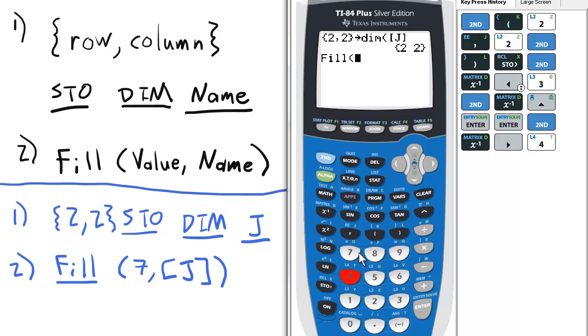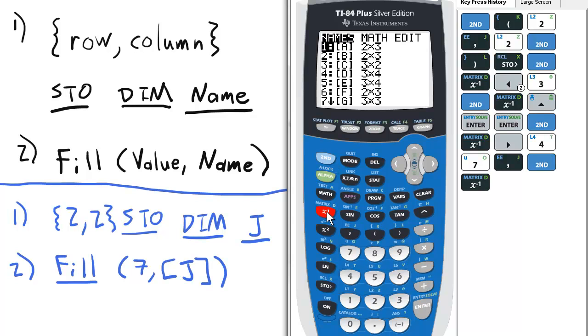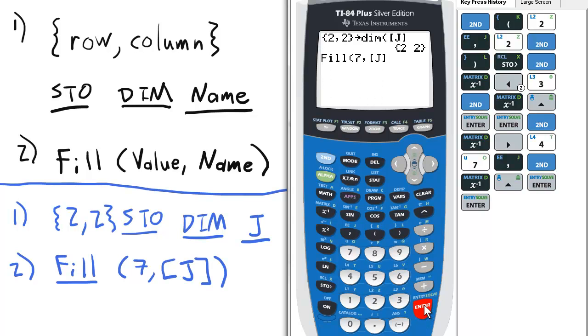We have to enter the value we want, we're going to enter each element will be a seven, and then comma, and then the name of the matrix we're going to fill. In this case, it's going to be J, the last one which is two by two, and just press enter.